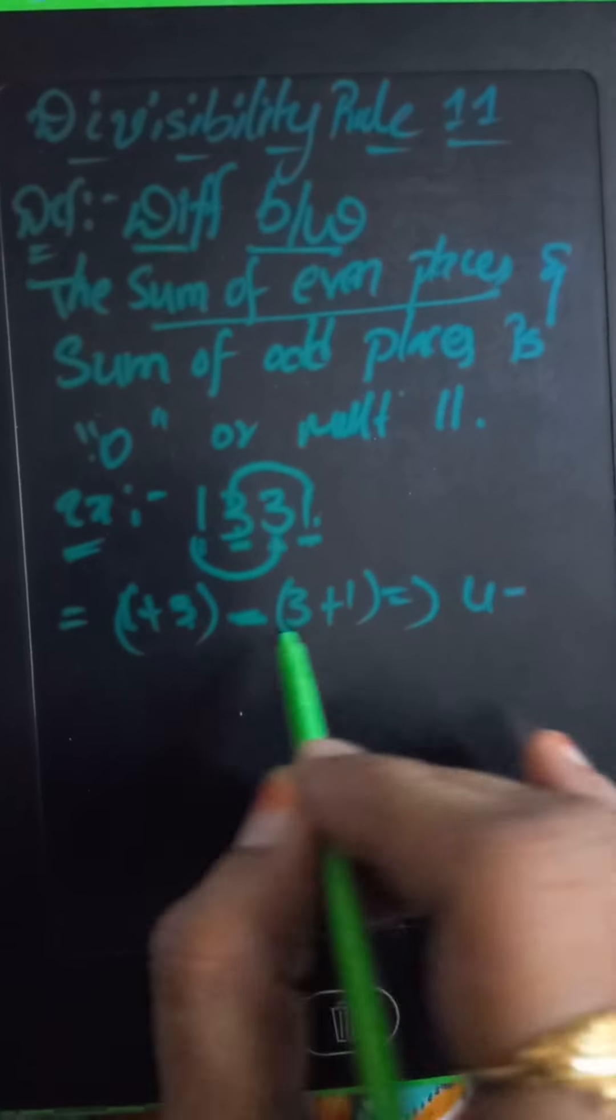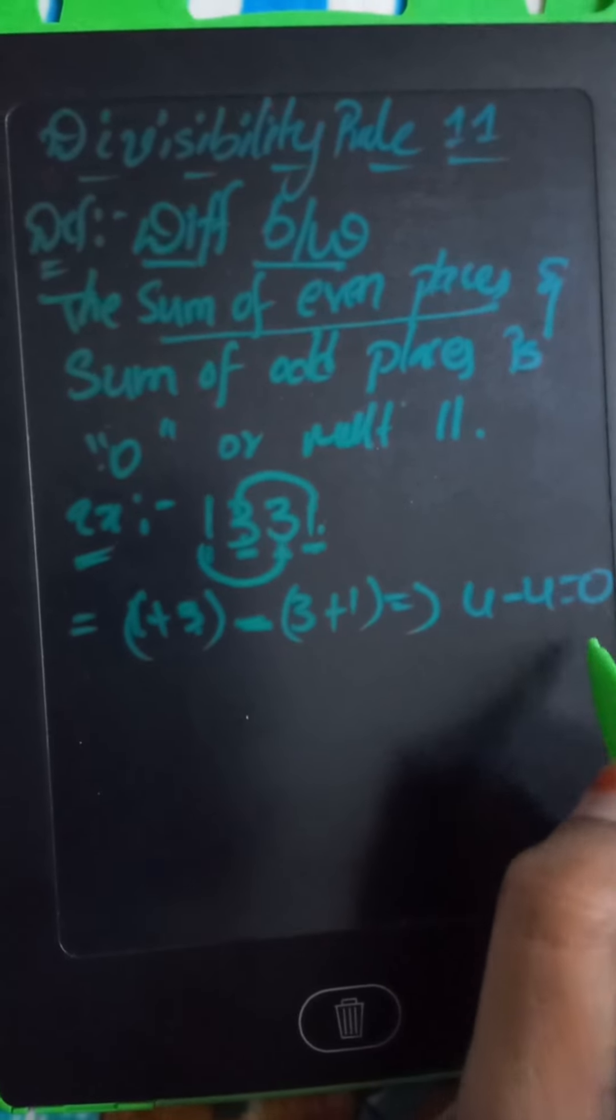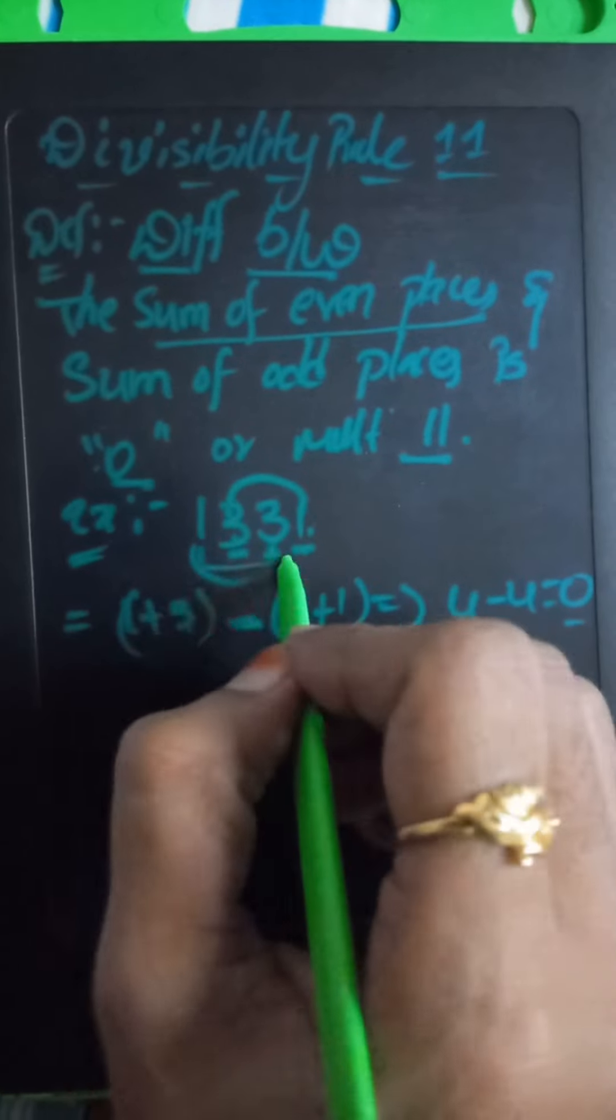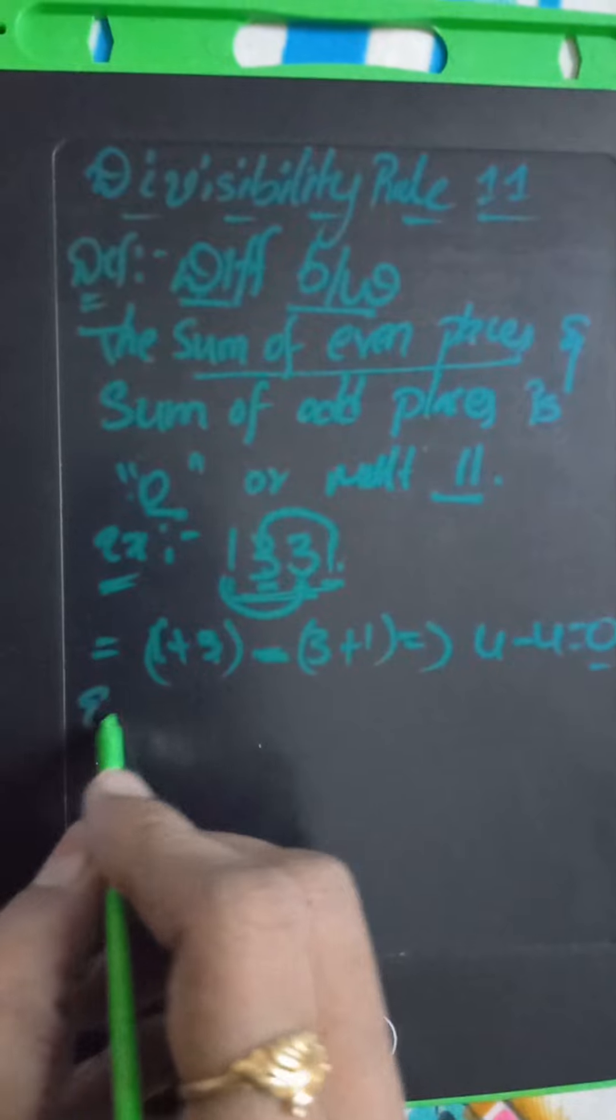1 plus 3 equals 4, minus 4 equals 0. Result is 0, so the entire number is divisible by 11. One more example: